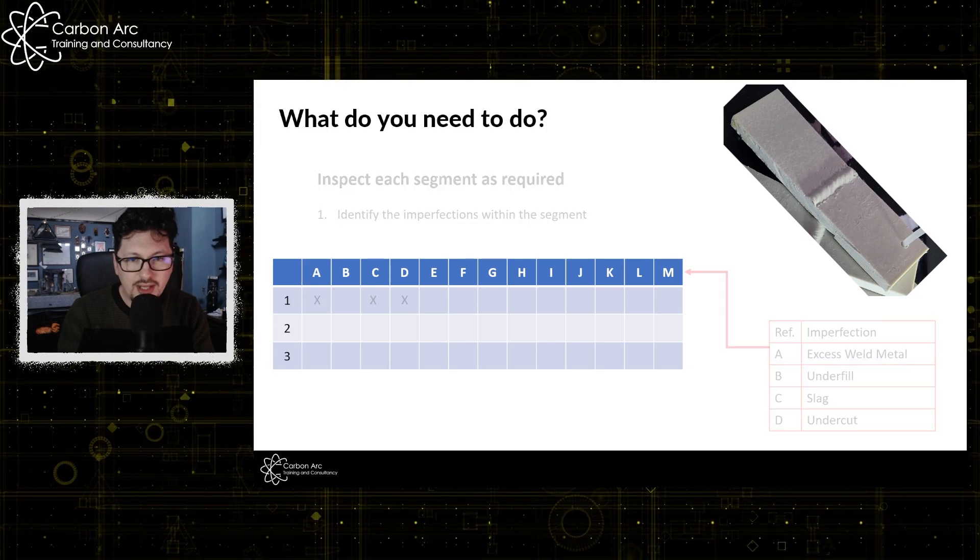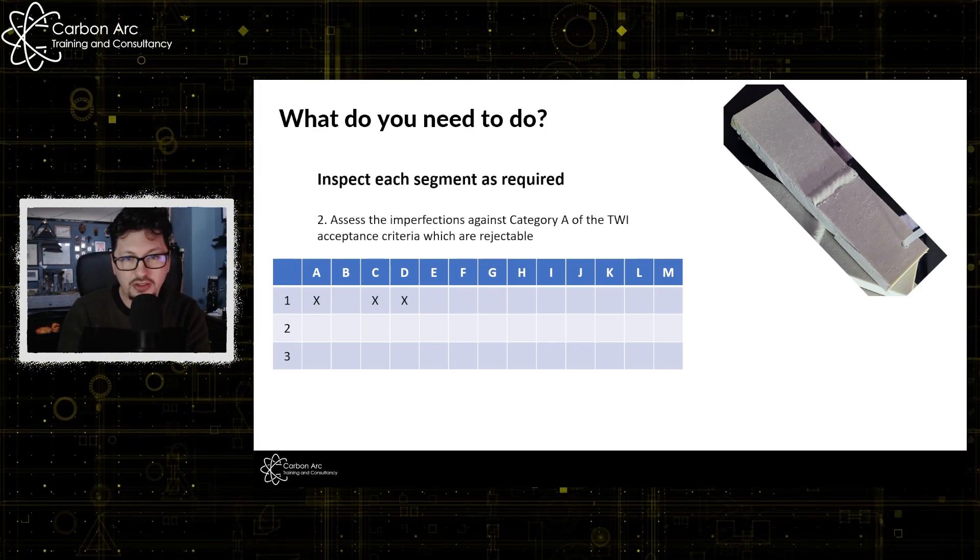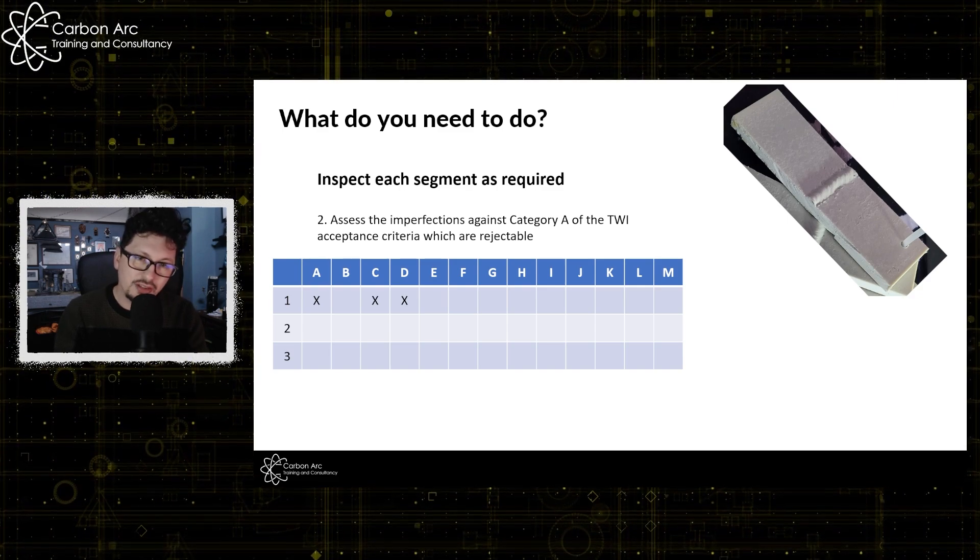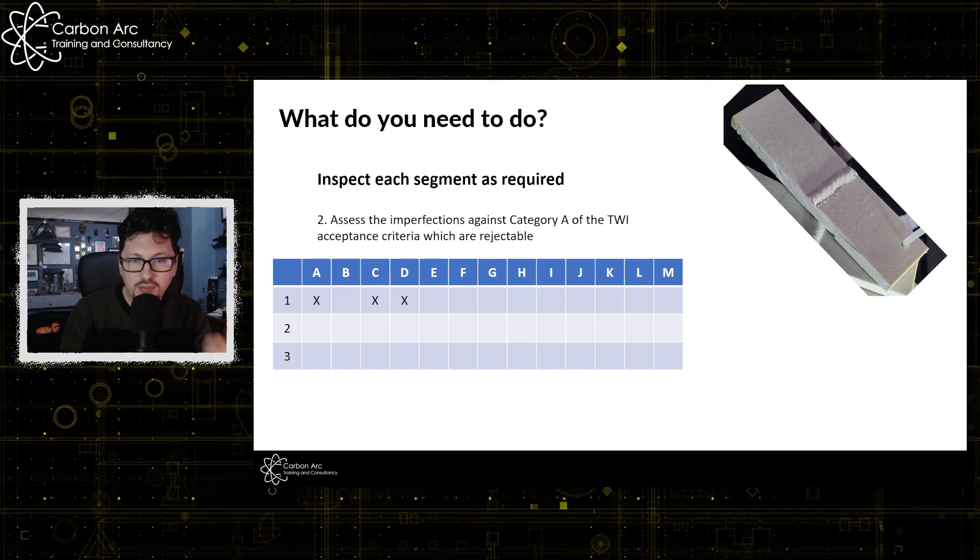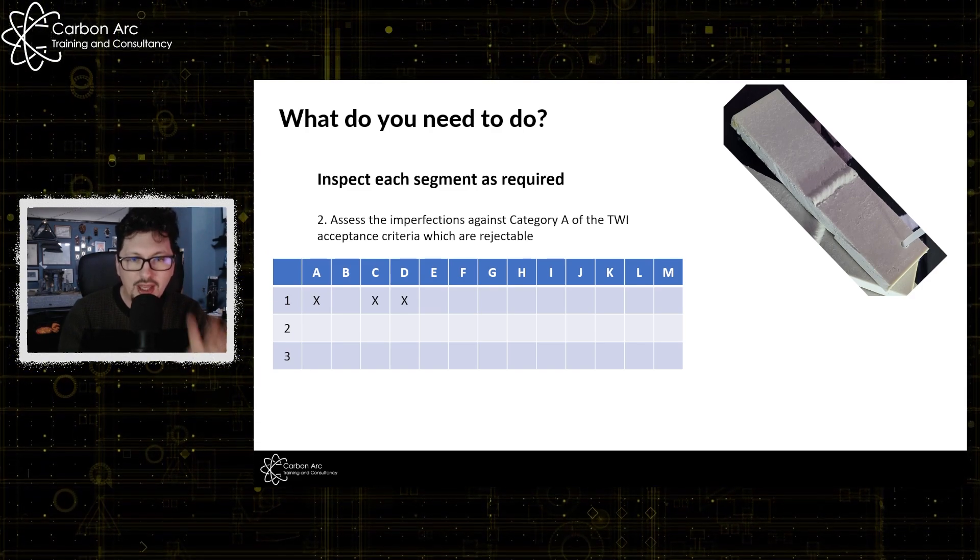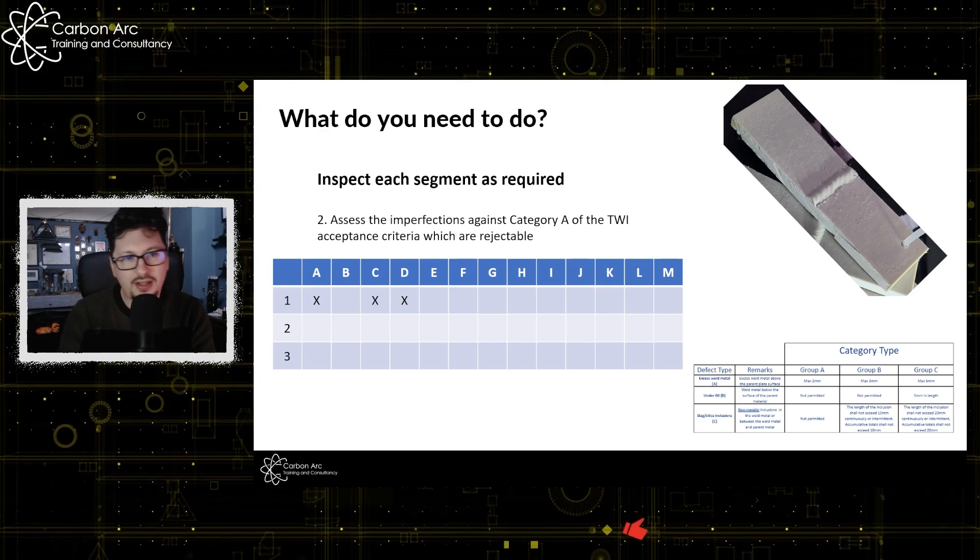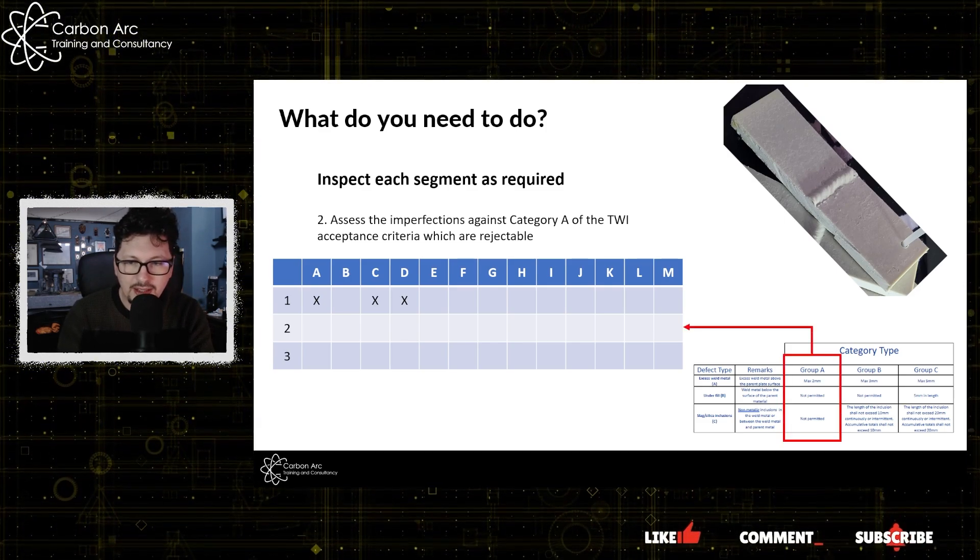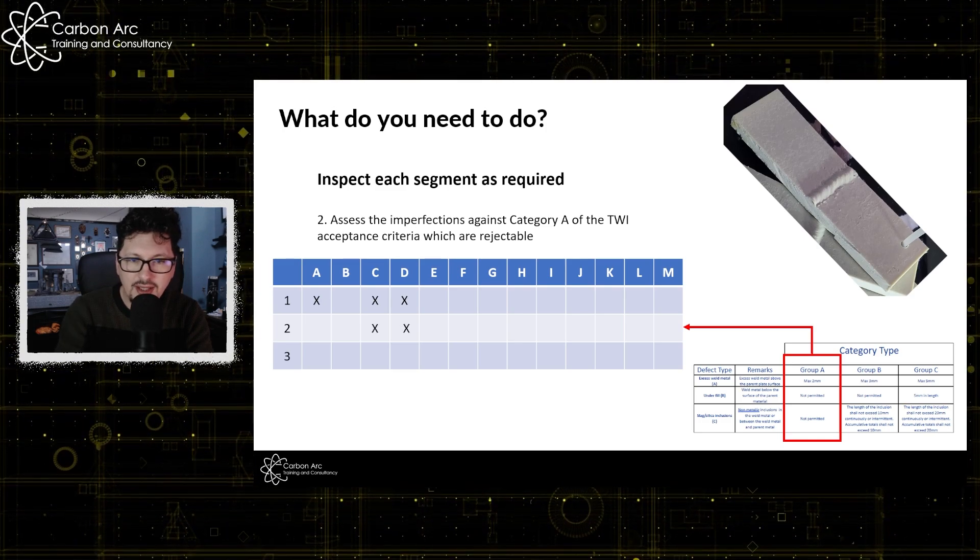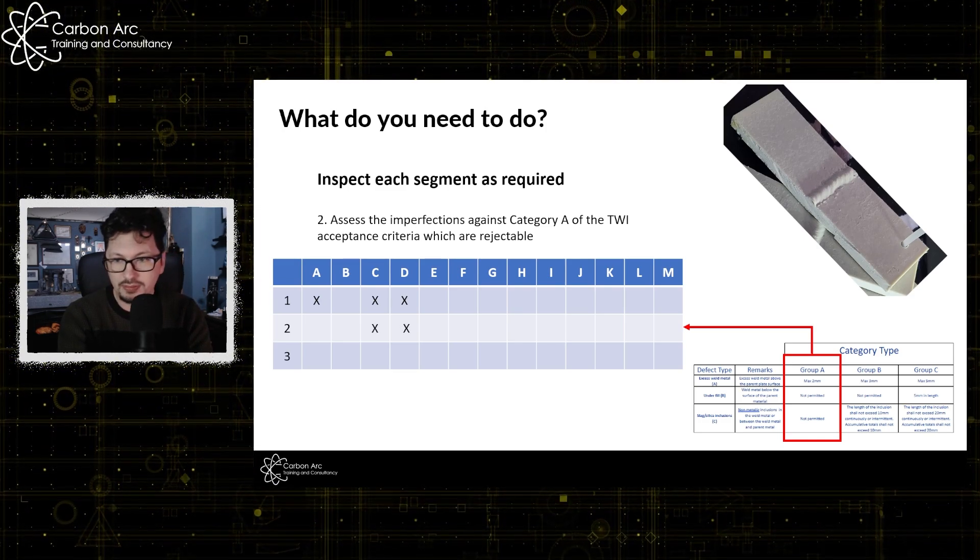So the next question then is assess these in accordance with category A. So on line two, you're going to look at an acceptance criteria and say, right, I've got these, which would be rejectable against category A. So I can look at my acceptance criteria there, pull out category A, stick them in the line. I want to say, right, out of category A, both C and D are rejectable.